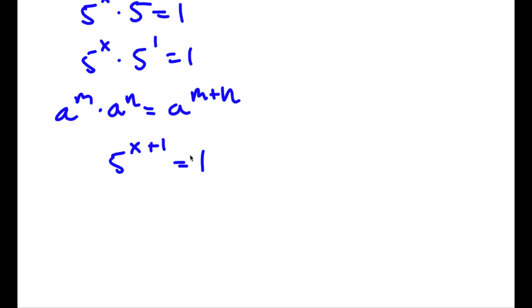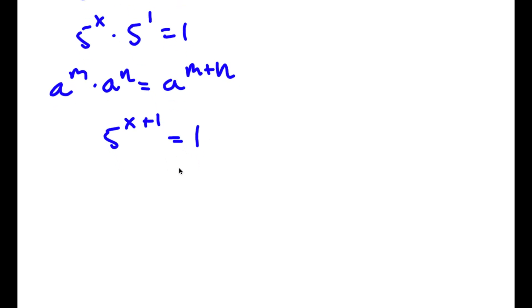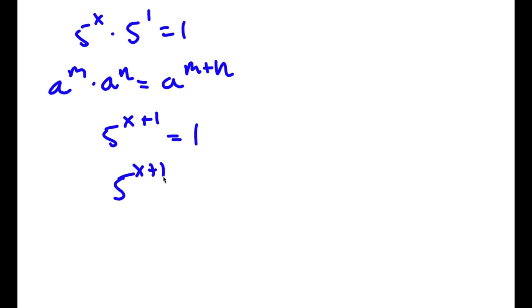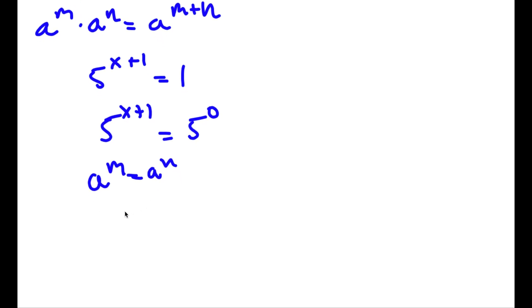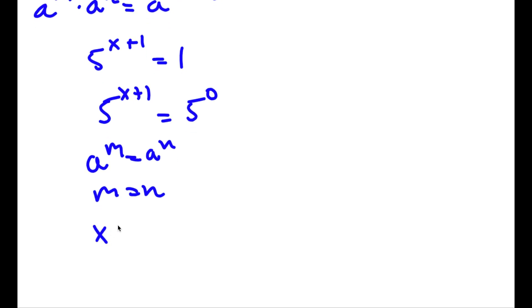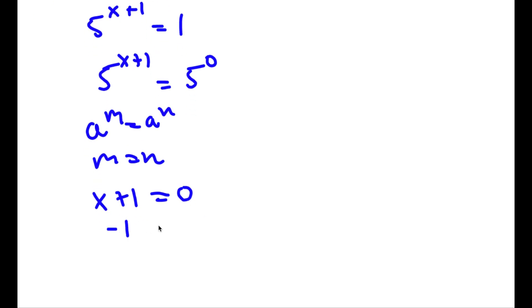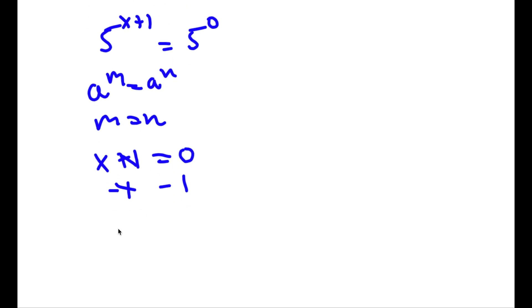Now any number to the power of 0 is equal to 1, so we could rewrite 1 as 5 to the power of 0. And if I have something in the form a to the power of m is equal to a to the power of n, this means that m is equal to n. So in this case, x plus 1 is equal to 0. To solve for x, I'm going to subtract 1 from both sides, so x is equal to negative 1.